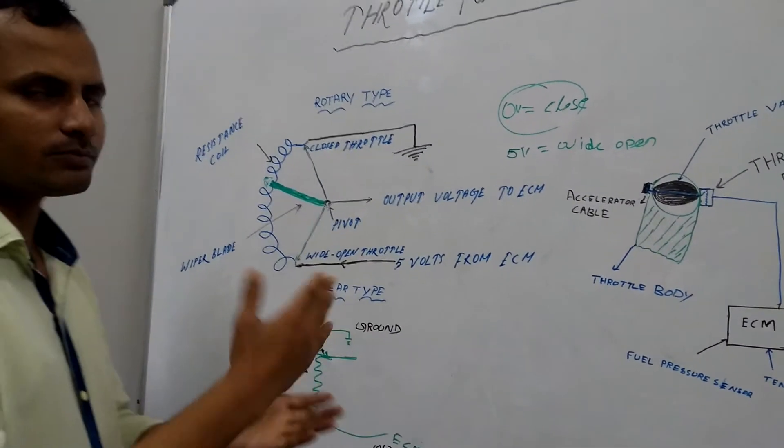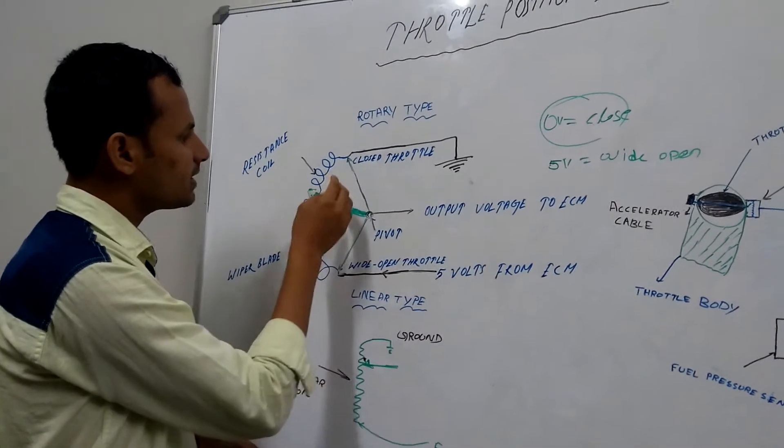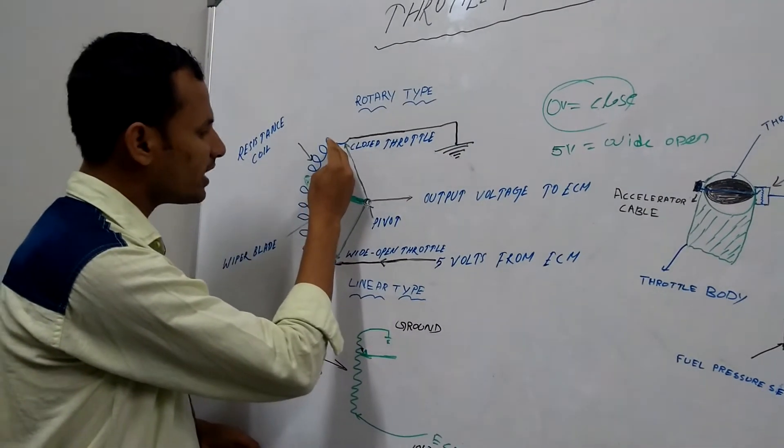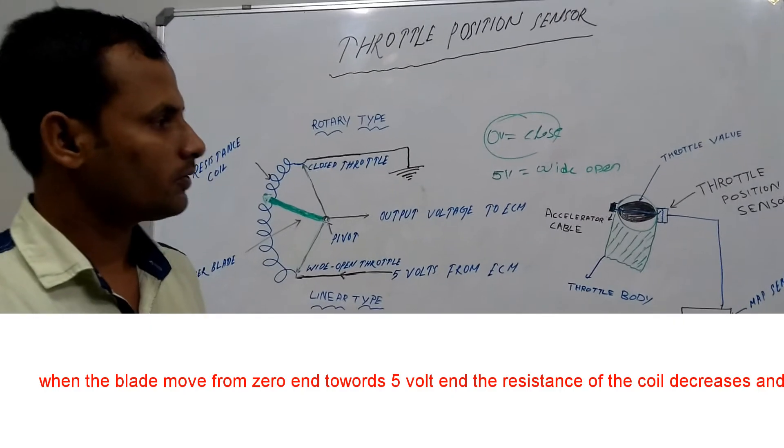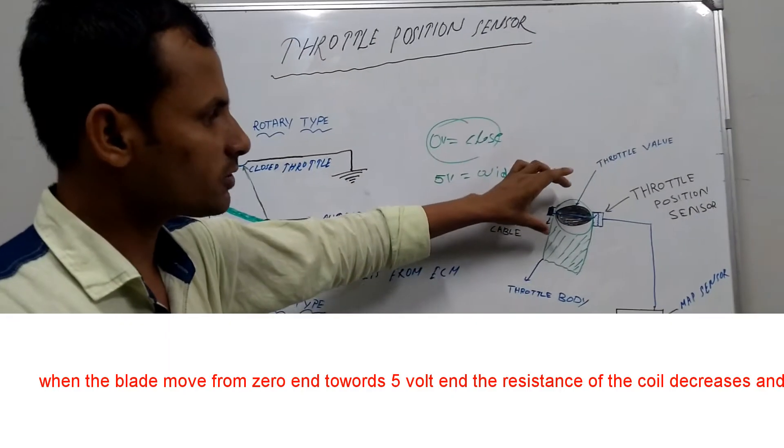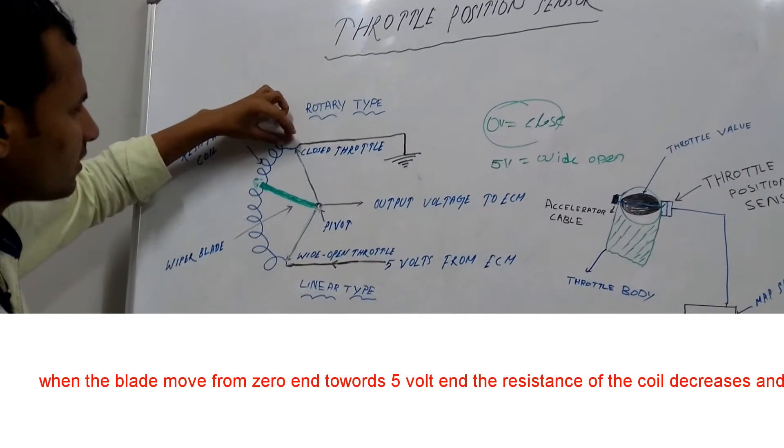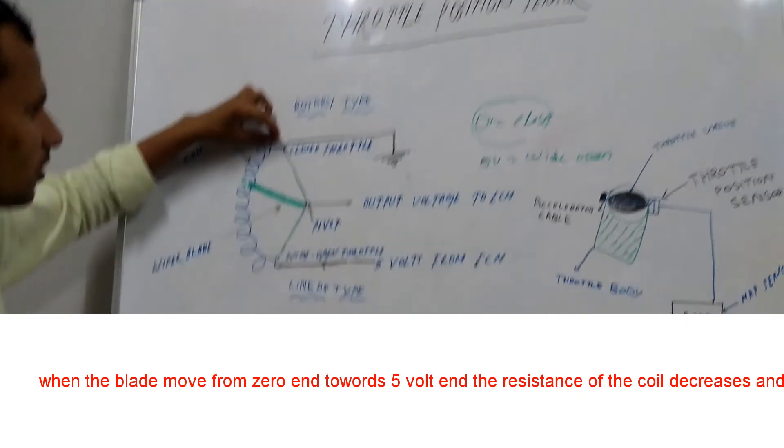As the throttle valve moves or twists, the wiper blade moves from the 0 end to the 5 volt end. When the throttle valve is in close position, the wiper blade is at the 0 end of the coil.